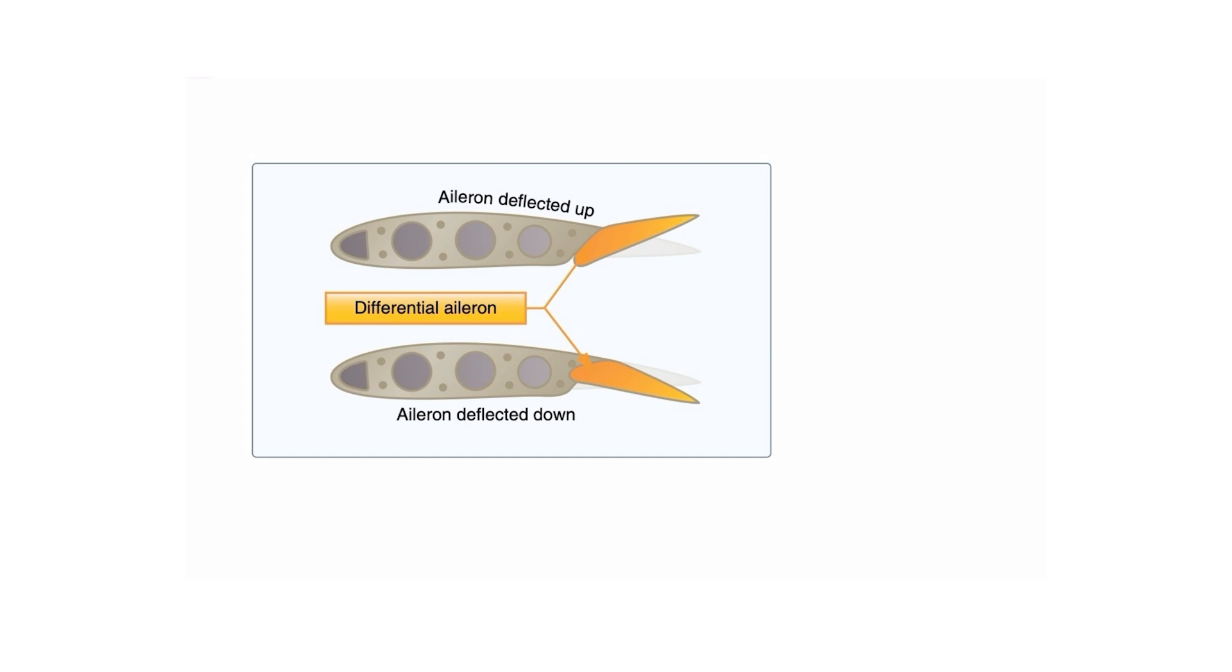As we bank the plane to the left, the lower aileron, the high wing, that's this one right here, that aileron does not go down as far as the low wing aileron goes up.